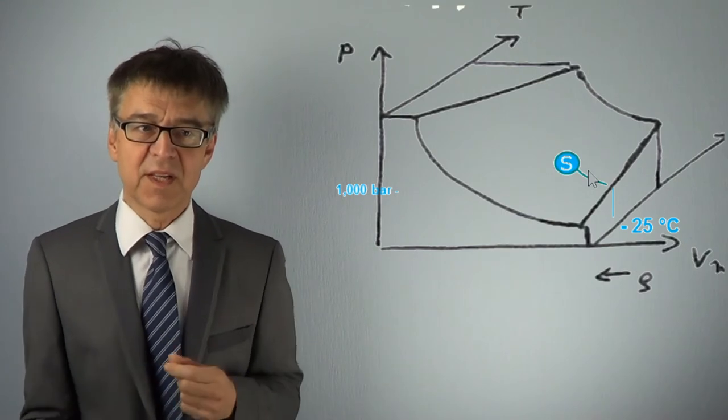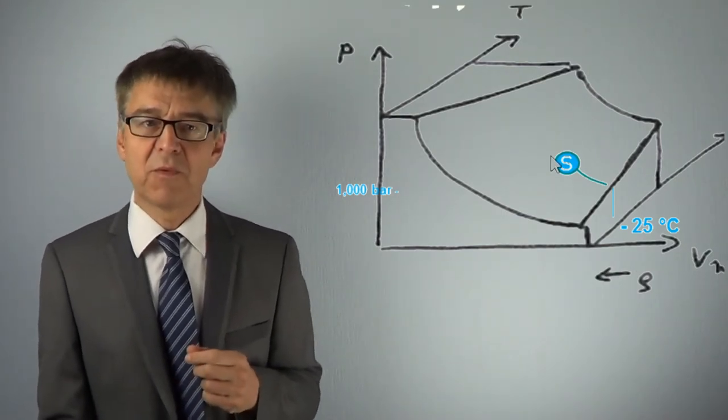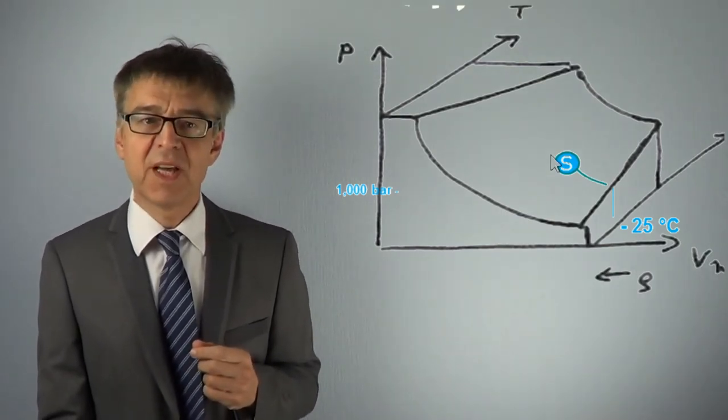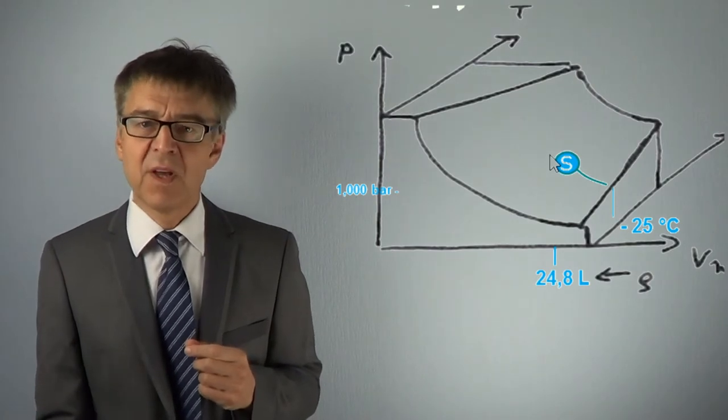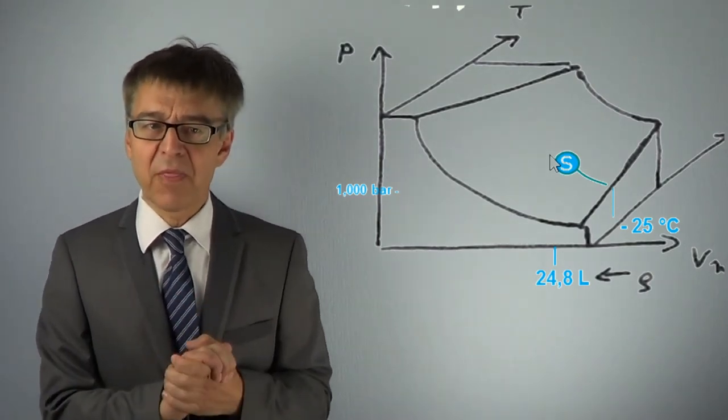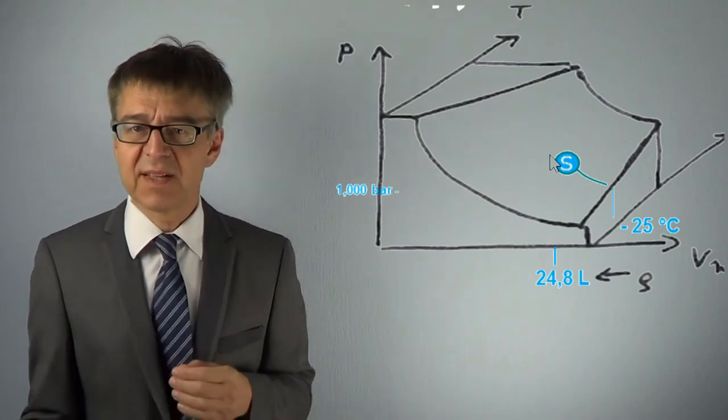In the standard state, carbon dioxide has a molar volume of about 24.8 liters. Interestingly, each gas has about this molar volume at standard state.